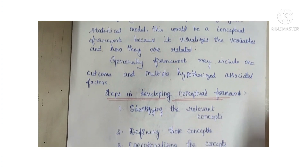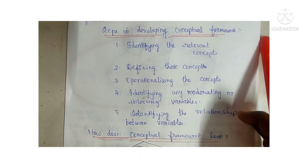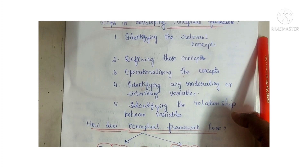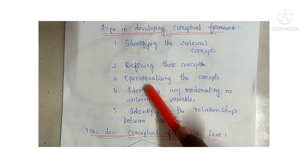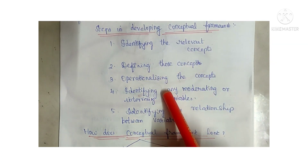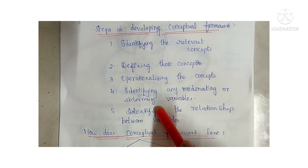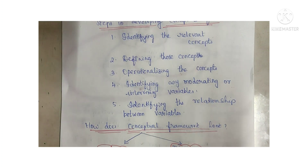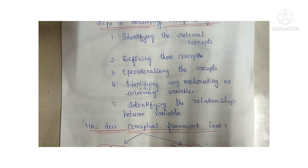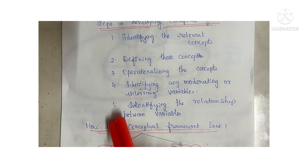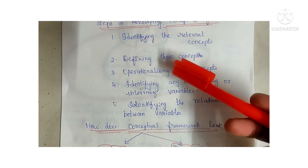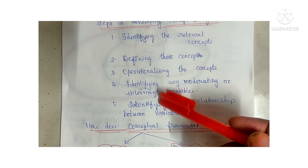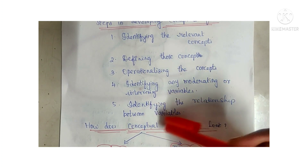Next are the steps in developing a conceptual framework. There are five steps: first, identify the relevant concepts; second, define those concepts; third, operationalize those concepts; fourth, identify any interfering, intervening, or moderating variables; and fifth, identify the relationship between variables.